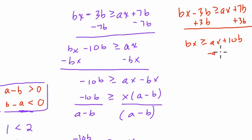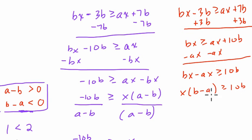We get bx is greater than or equal to ax plus 10b. And then we subtract ax from both sides. So it looks a little bit different. So you have bx minus ax is greater than or equal to 10b. So now, again, the common factor is x. We have b minus a here, greater than or equal to 10b. But what's b minus a? That's a negative number. So if I divide both sides by b minus a, what's going to happen?